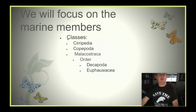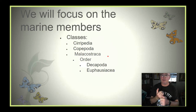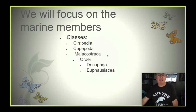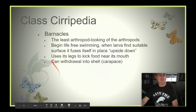We're going to focus on three of the classes: Cirripedia, which are the barnacles; Copepoda, which are the copepods; and Malacostraca, which makes up the decapods — the 10-legged members of this group including lobsters, crabs, shrimp, and Euphausiacea, which are the krill. We think of krill as the organisms that baleen whales like to eat.